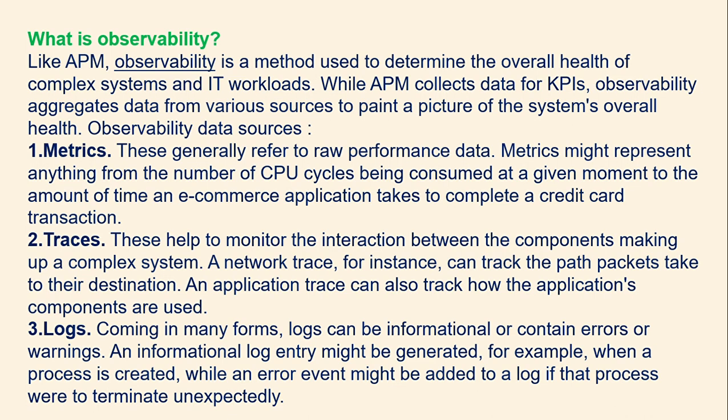The second data source is traces, which help monitor the interaction between the components making up a complex system. A network trace can track the path taken to a destination, and an application trace can track how application components are used. The third is logs, which come in many forms and can be informational or contain errors or warnings. For example, an informational log entry might be generated when a process is created, while an error event might be added to a log if that process terminates unexpectedly.